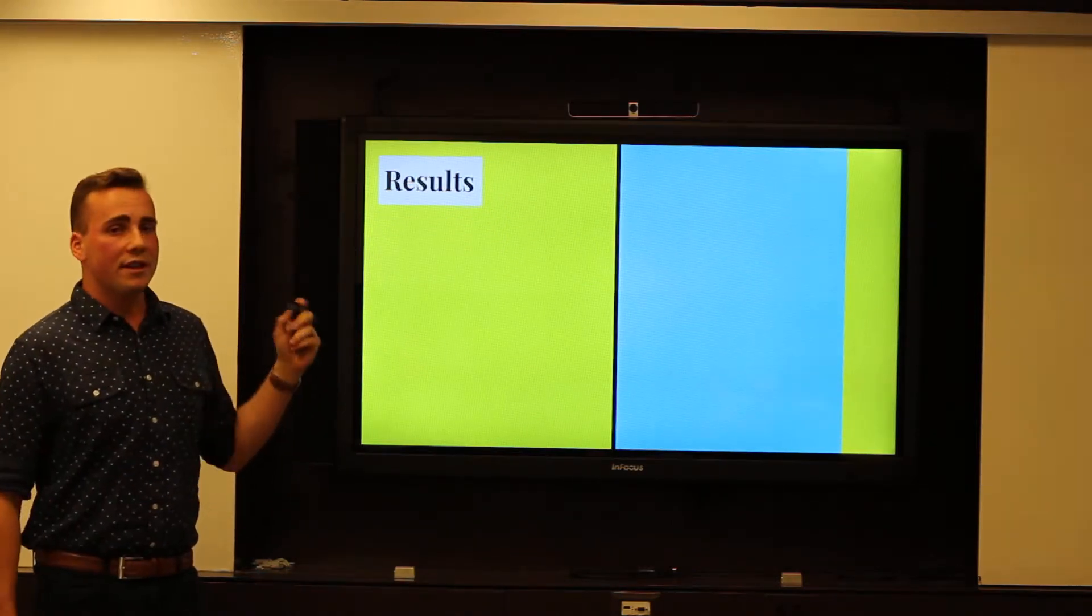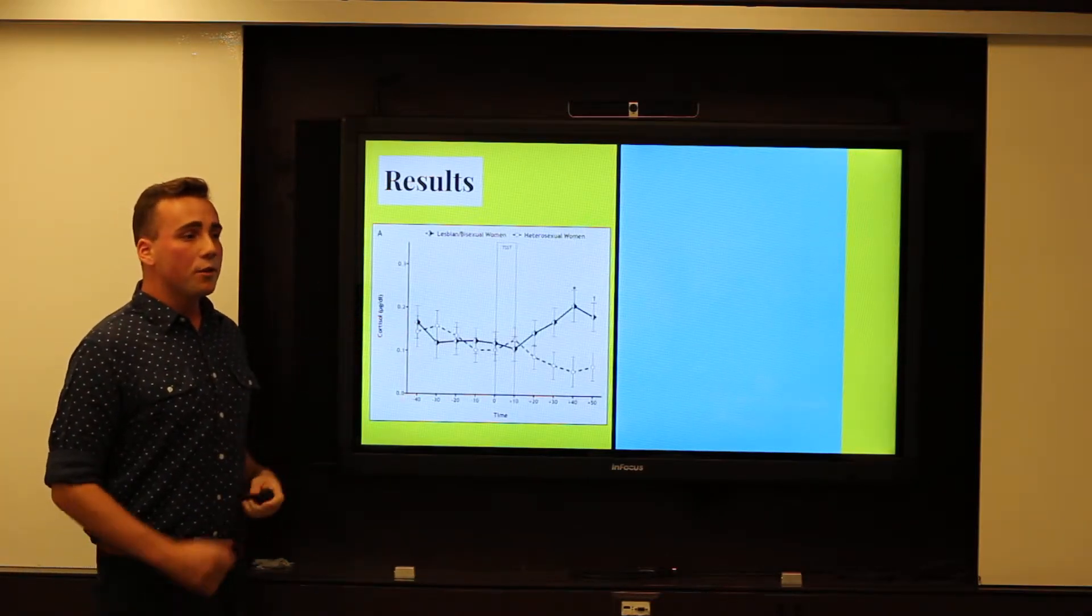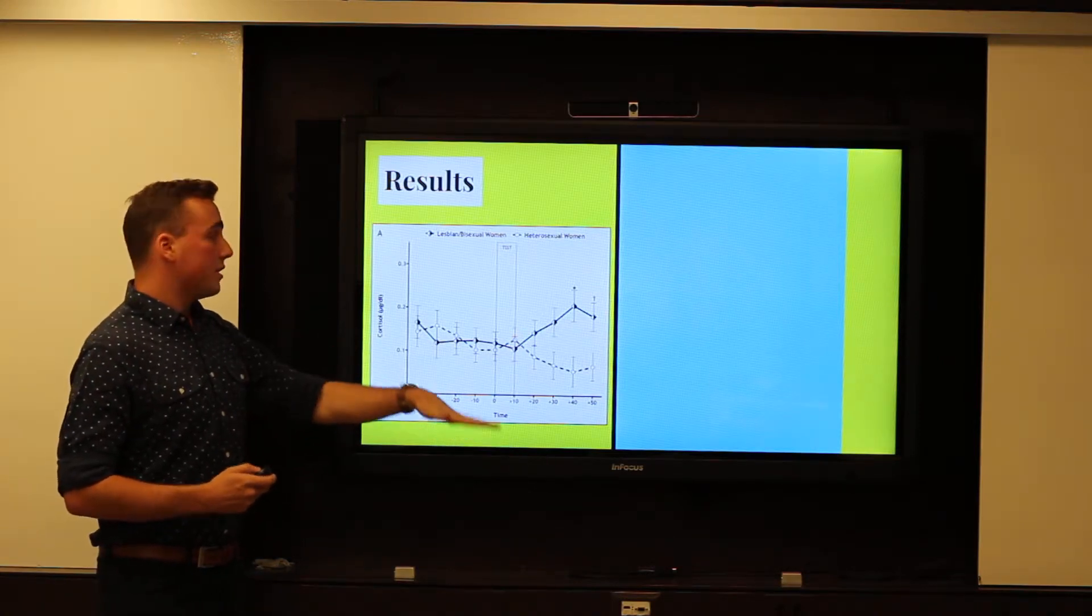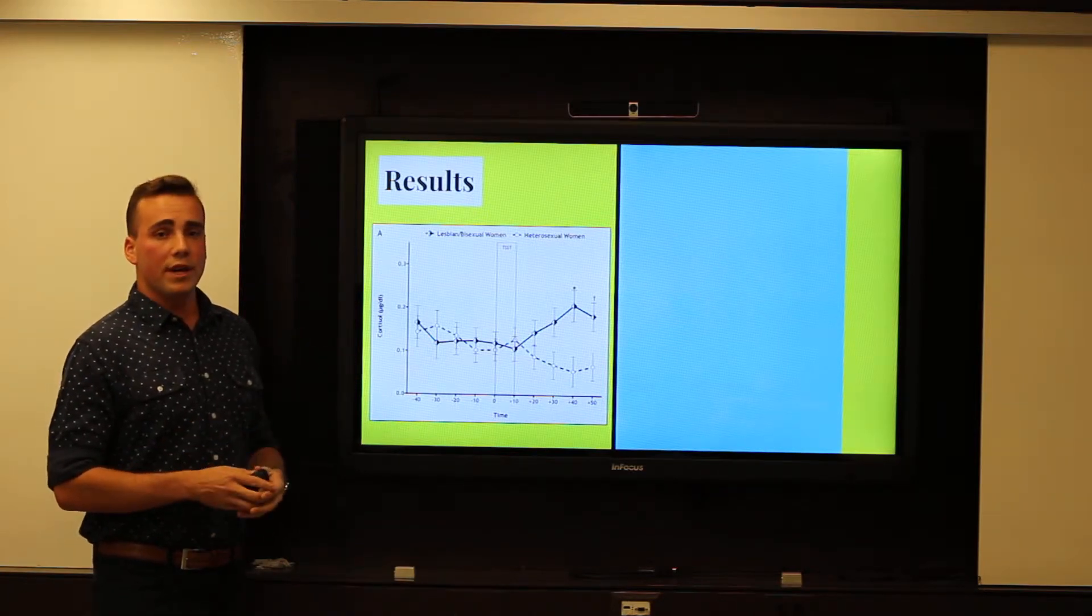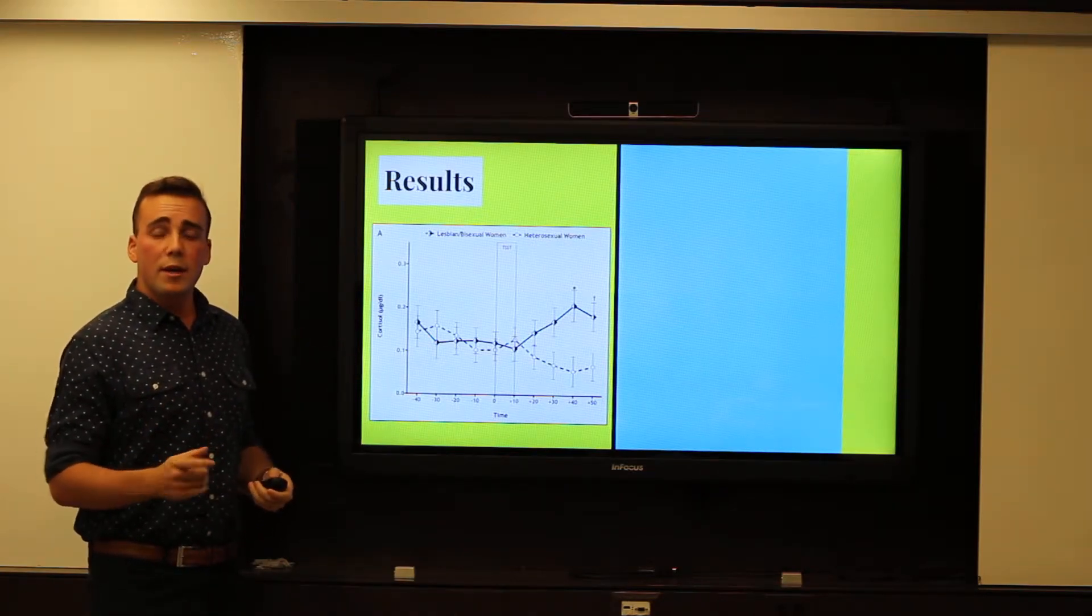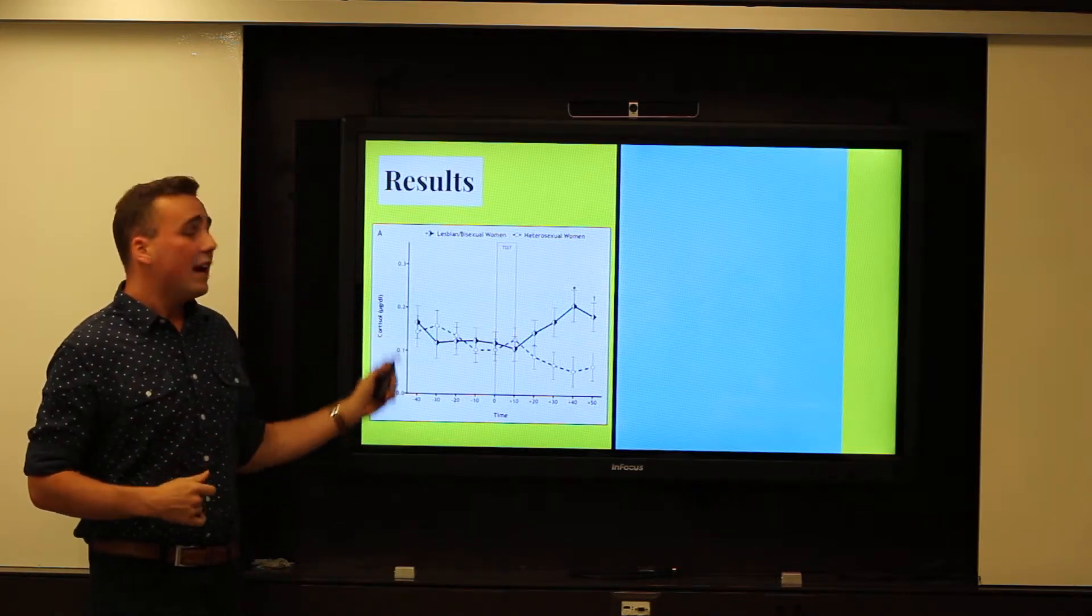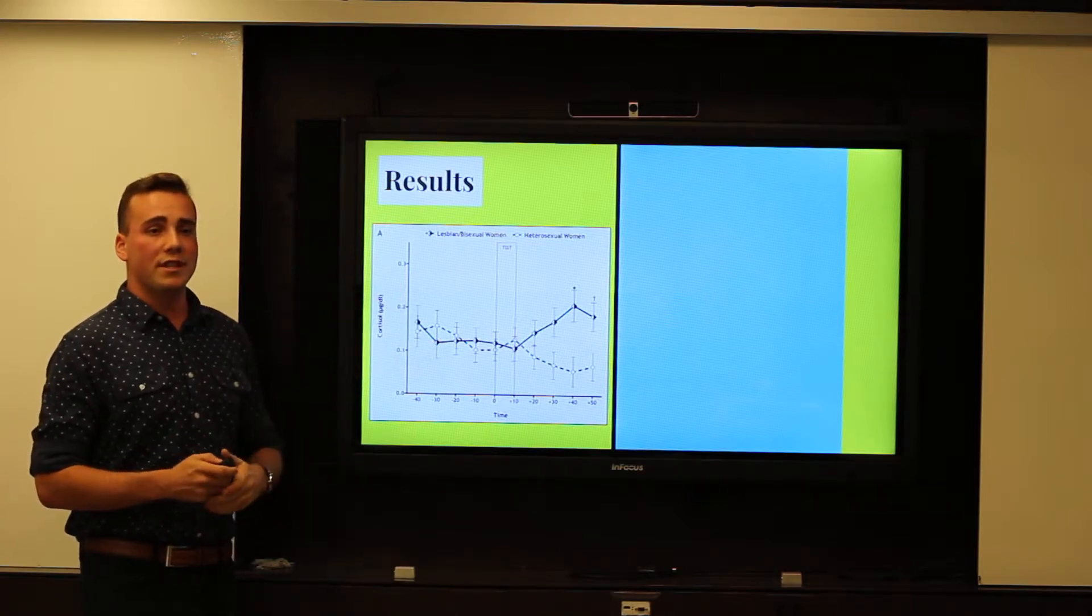The results: the researchers found that heterosexual women actually showed a minor increase in cortisol reactivity levels during the stress test, but then showed lower reactive levels afterward. Queer women, however, showed a small decrease in cortisol reactivity levels during the stress test, but then showed an actual increase in stress response afterwards, peaking at about 30 minutes after the stress test had concluded.